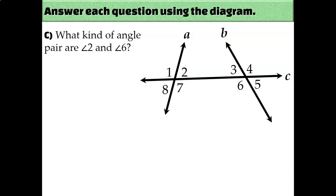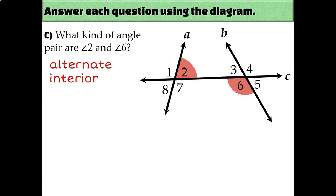What kind of pair of angles is angle 2 and angle 6? The first thing I notice is that one angle is above transversal C and the other is below it — that makes them alternate, because they're on opposite sides of the transversal. They're also in between lines A and B, which makes them interior. So these would be alternate interior angles.